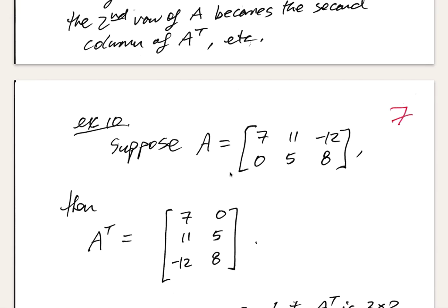Using matrix A, which is 2 by 3: the first row, 7, 11, -12, becomes the first column of the transpose, written up and down. The second row, 0, 5, 8, becomes the second column. The transpose therefore has dimensions 3 by 2 instead of 2 by 3 — the dimensions are always interchanged when taking a transpose.